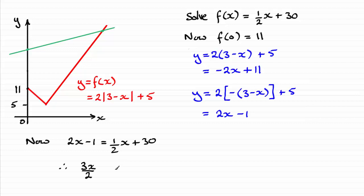And then if I add 1 to both sides, you've got 30 plus 1, which is 31. And so if I multiply both sides by 2, that will give me 3x equals 62. And then divide by 3, I end up with x equals 62 over 3. And there's our one solution.